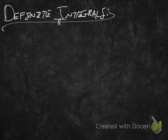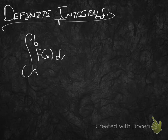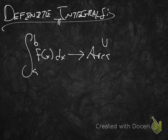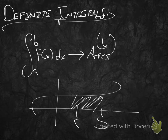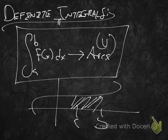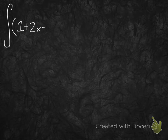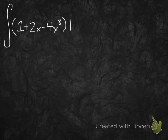Just as a quick recap: a definite integral is the integral over some interval a to b of f(x) dx, and it gives us area — some value of area — that tells us on a graph how much space between point a and point b is being taken up. So, let's do a third degree polynomial. I want to find the definite integral of 1 plus 2x minus 4x cubed dx over the interval 1 to 3.